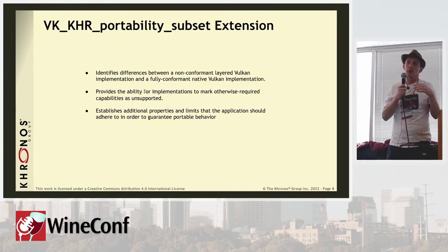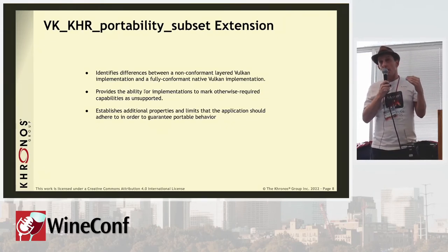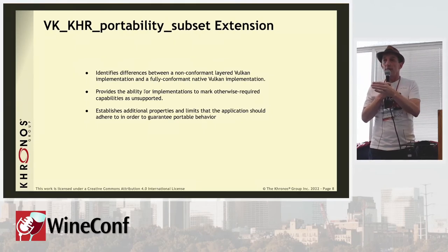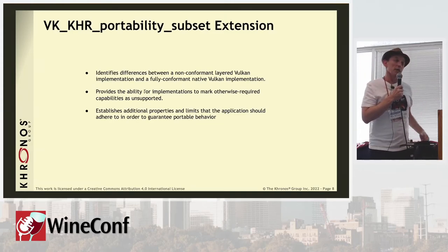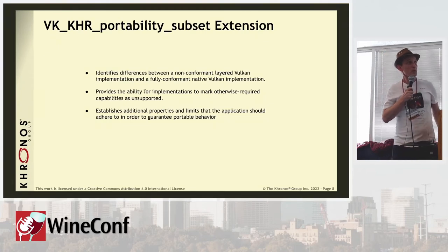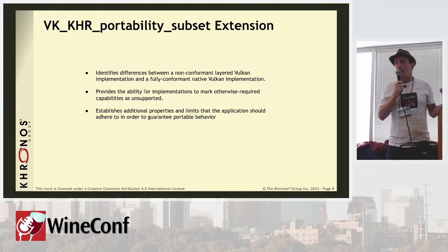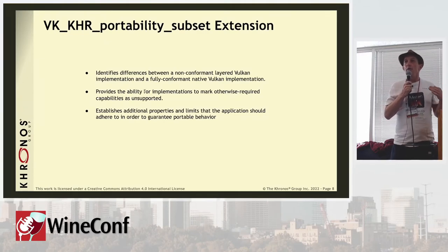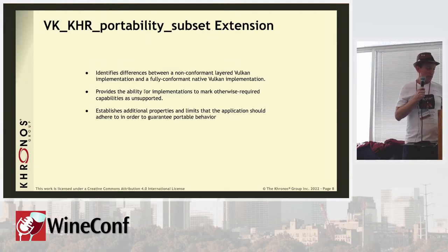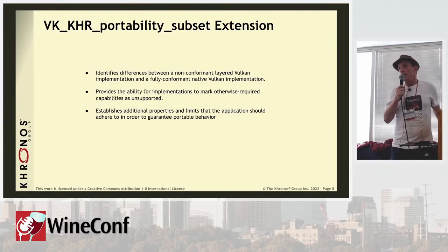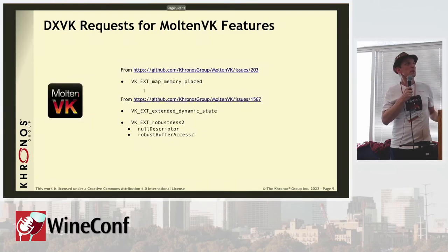Once we get the CTS failures down to zero, we'll have a definitive set of flags for Vulkan 1.0 and 1.1 indicating what may or may not be supported on any particular platform. Sometimes they do, sometimes they don't — it depends on how far back you go on iOS or macOS, and obviously depends on the GPU as well. This allows a game or app to query the actual capabilities of a non-conformant platform.